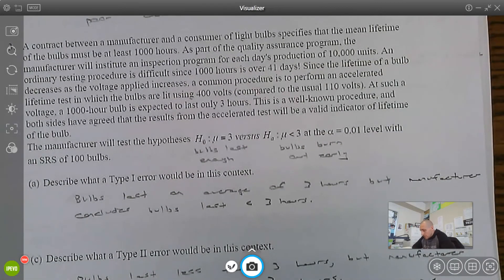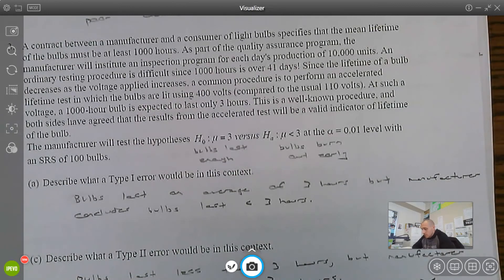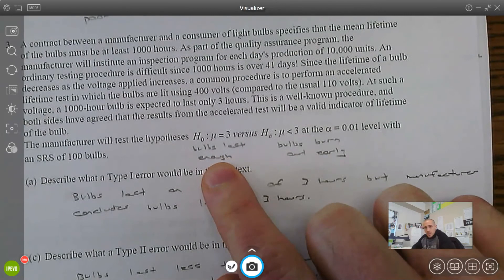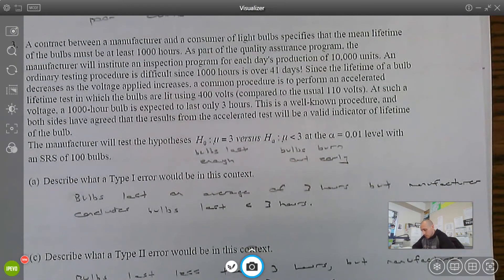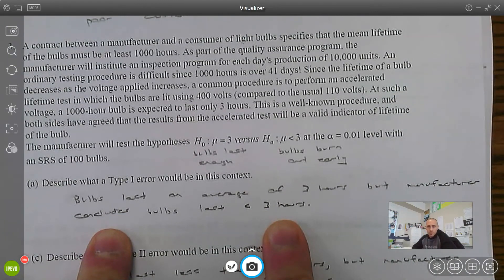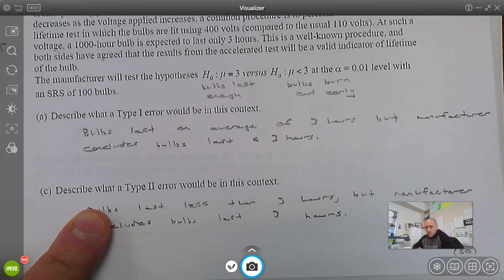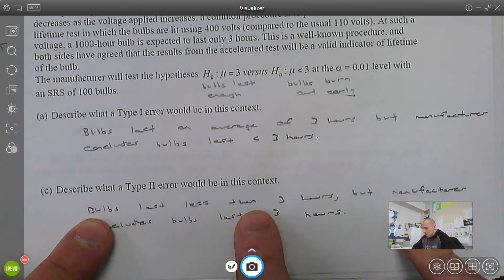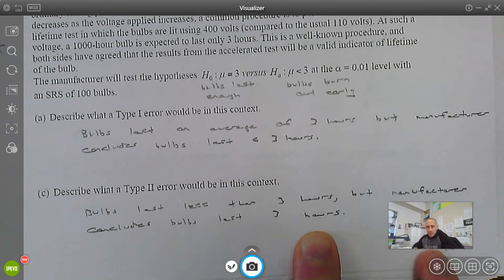The last question. So we have this null of 3 and the alternative is less than 3. The null is that the bulb lasts enough, and the alternative is that the bulb burns out early. So Type 1 error, the null is true but we reject it. So it's true that the bulbs last an average of 3 hours, but we conclude that they last less than 3 hours. Doesn't ask for a consequence. Type 2 error, the alternative is true but we don't find convincing evidence for it. So the bulbs actually last less than 3 hours, but we conclude that they last 3 hours because we didn't find convincing evidence for the alternative.